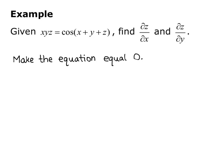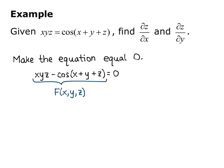I'll move everything to the left side of the equal sign, so xyz minus cosine of x plus y plus z equals zero. Now, xyz minus cosine of x plus y plus z defines F of x, y, z.